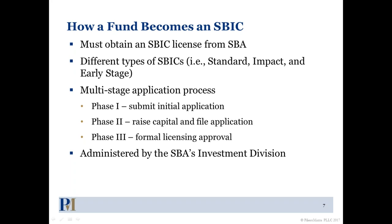To get an SBIC license there's an application process that can be broken up into three phases. Phase one is the preliminary step where you submit an initial application. Phase two involves raising capital and filing your application with the SBA. Phase three is getting your formal licensing finally approved. All of this is administered by the SBA's investment division.